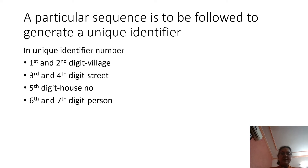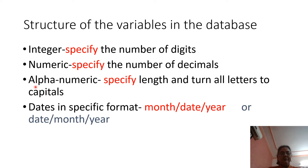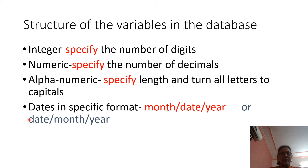We should also specify details about variables before entering them into the database. We should know whether a variable is an integer and specify how many digits are to be entered. If it is numeric, specify the number of decimal places. If the variable is alphanumeric, specify the length and convert all letters to capitals. If dates are used as a variable, mention them in a particular format such as month-date-year or date-month-year. All these specifications should be defined before we start entering the data.